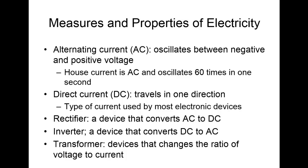Electricity can either be alternating current (AC) or direct current (DC). An alternating current oscillates between negative and positive, where a direct current travels only in one direction — this type is used by most electronic devices. A rectifier is a device that converts from AC to DC. An inverter converts the opposite way, from DC to AC. A transformer changes the ratio of voltage to current. The power supply used in computers is both a rectifier and a transformer.